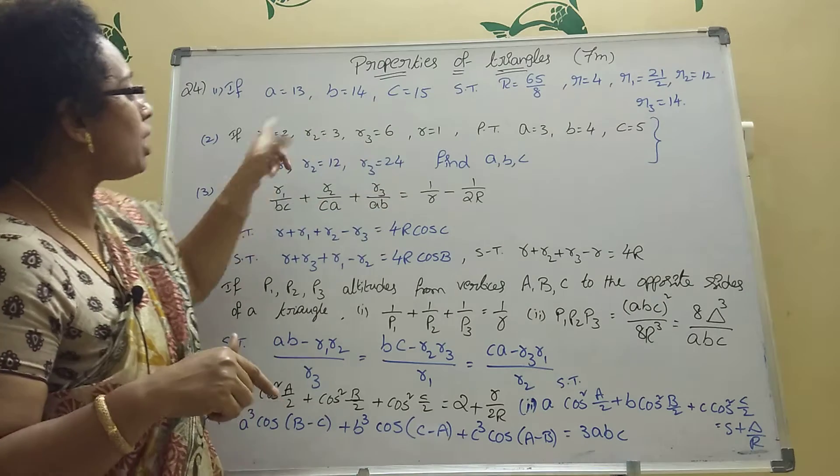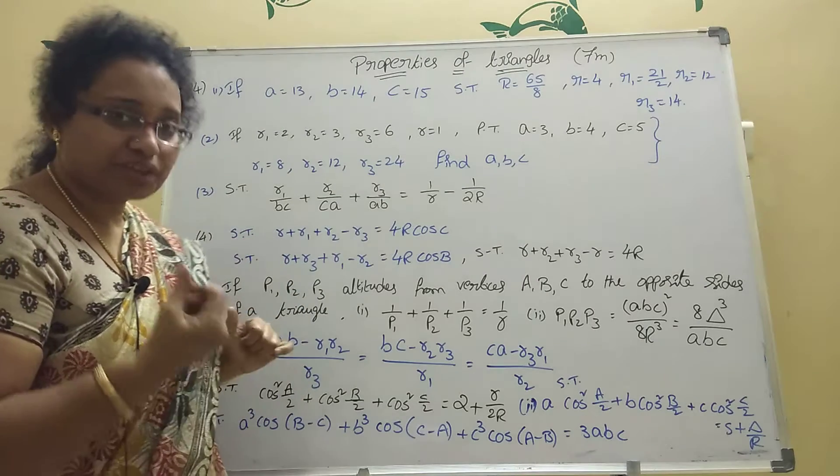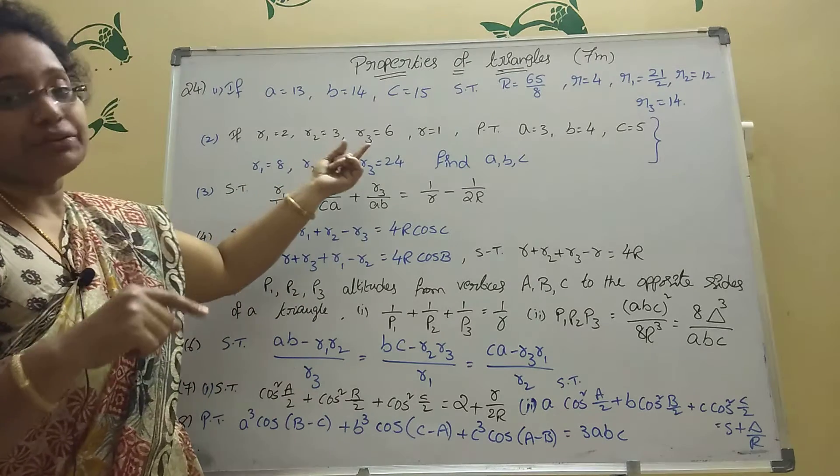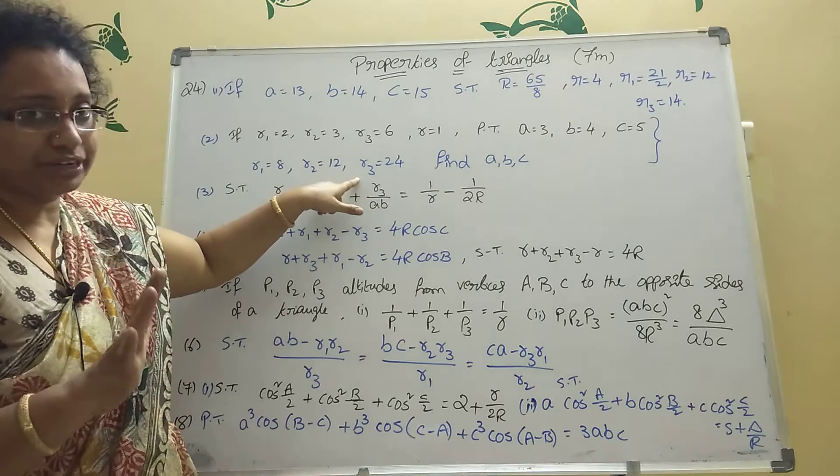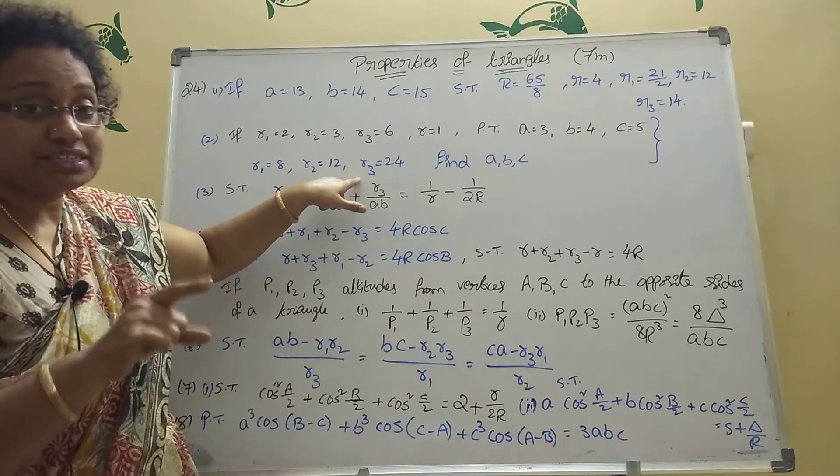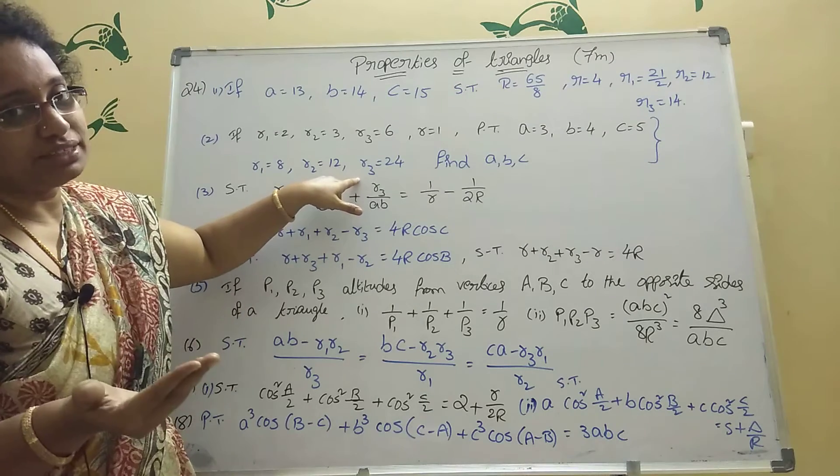Use that formula, you will get first delta. Suppose here R is not given. Then here see, R1, R2, R3 only given, R not given. That time one formula is there. What is that? 1 by R equal to 1 by R1 plus 1 by R2 plus 1 by R3. I am telling small r's. Use that formula, you will get small r.